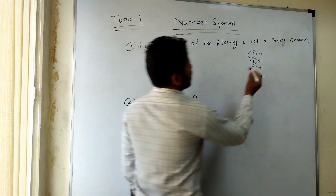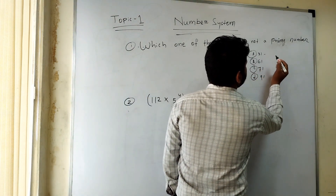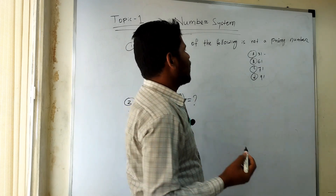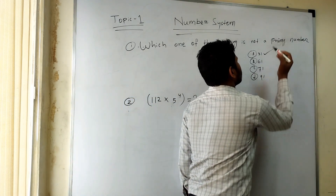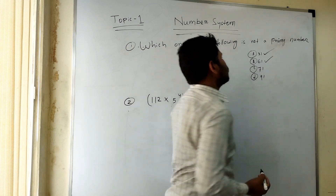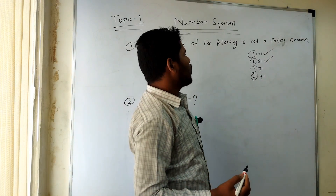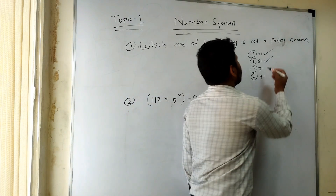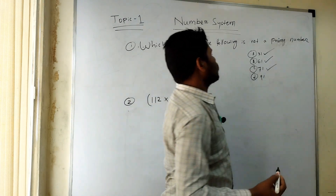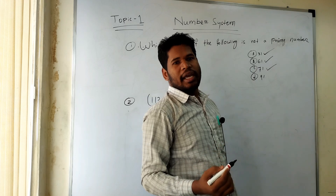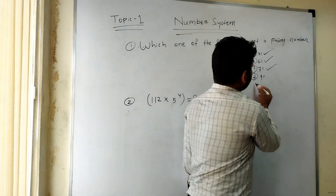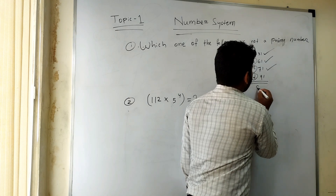Here you can clearly see: 31 is only divisible by 1 and 31 itself, so it's a prime number. 61 is also divisible by only 61 and 1, so it's also a prime number. And 71 is also divisible by only 1 and 71, so it's also a prime number.